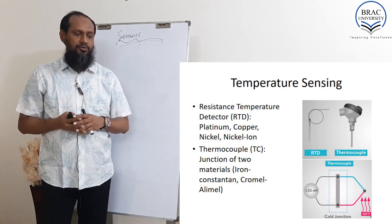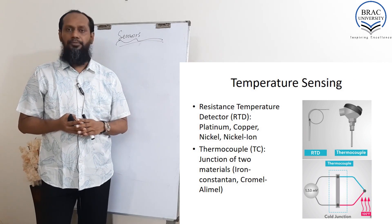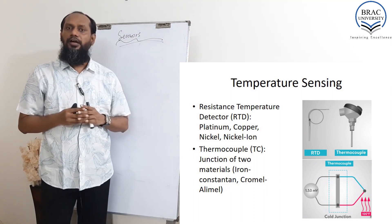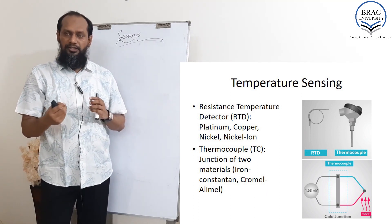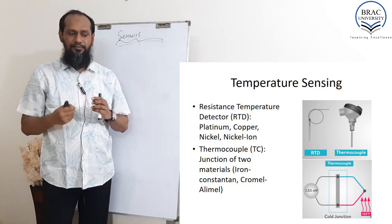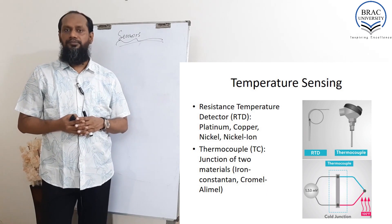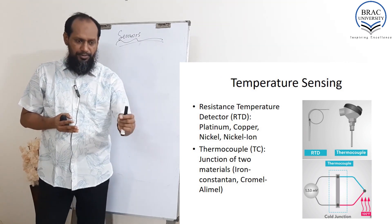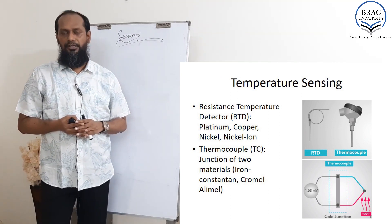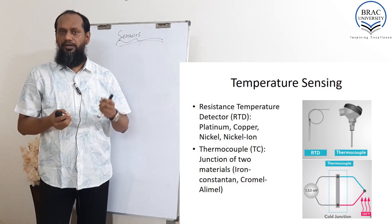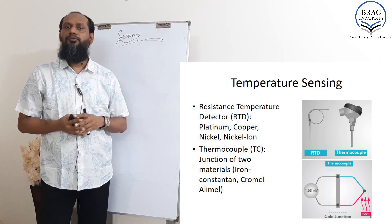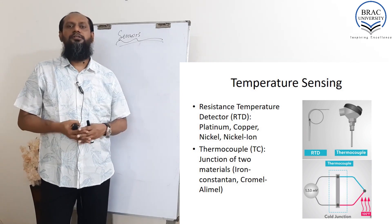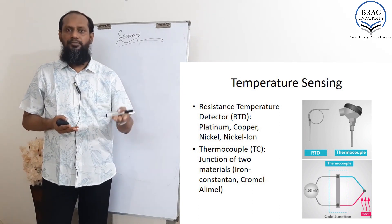Then we are going to talk about the thermocouple. A thermocouple is a junction of two different types of material, and when temperature is applied at that junction it produces a voltage difference — you can see in the picture, 1.53 millivolt, just like a microphone where there is a very small amount of voltage fluctuation. So a very simple, easy, low-cost sensor can be designed using this kind of thermocouple.